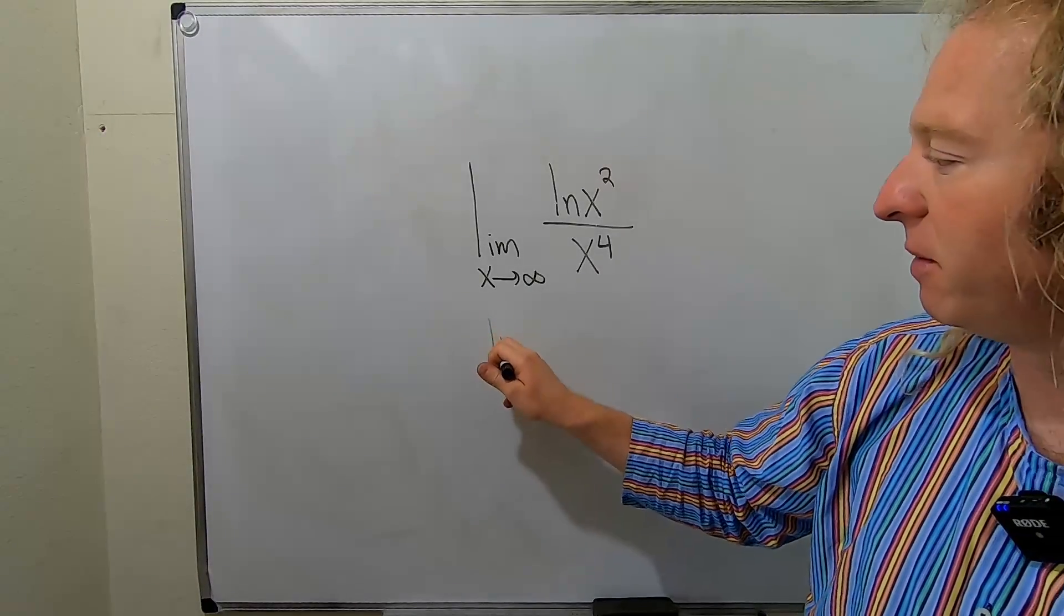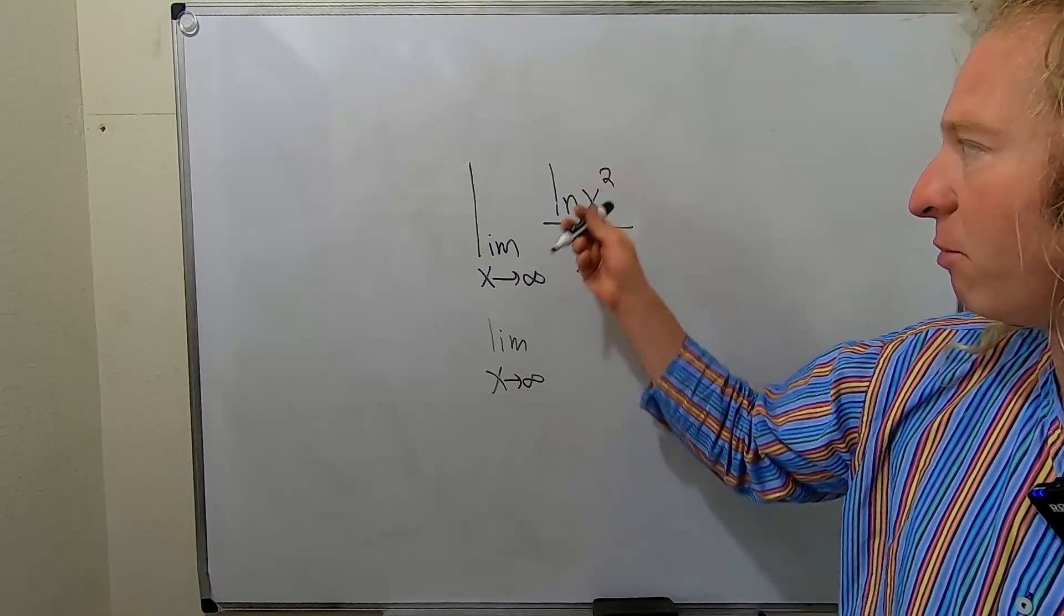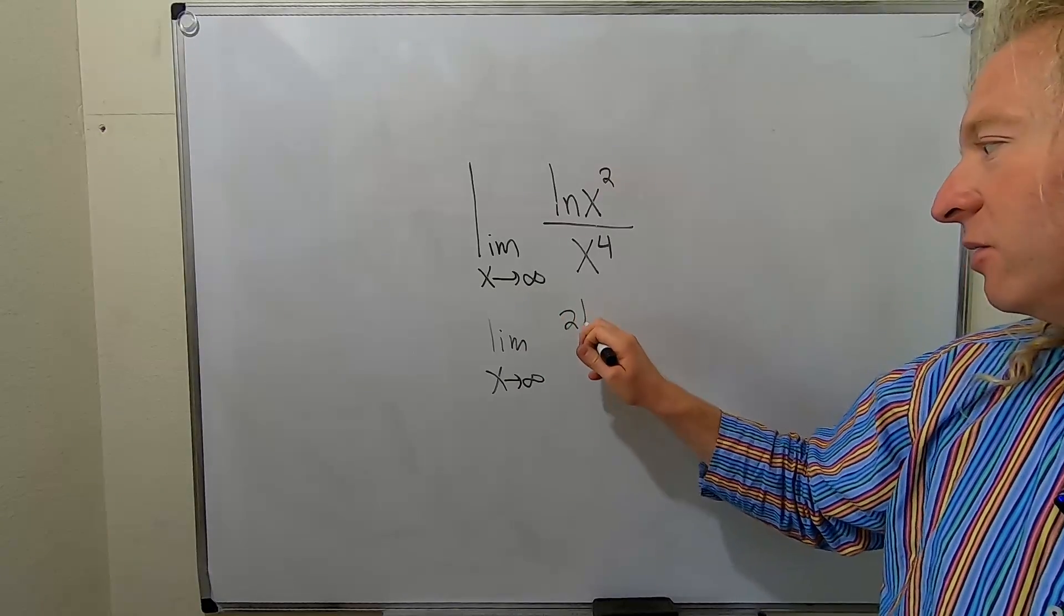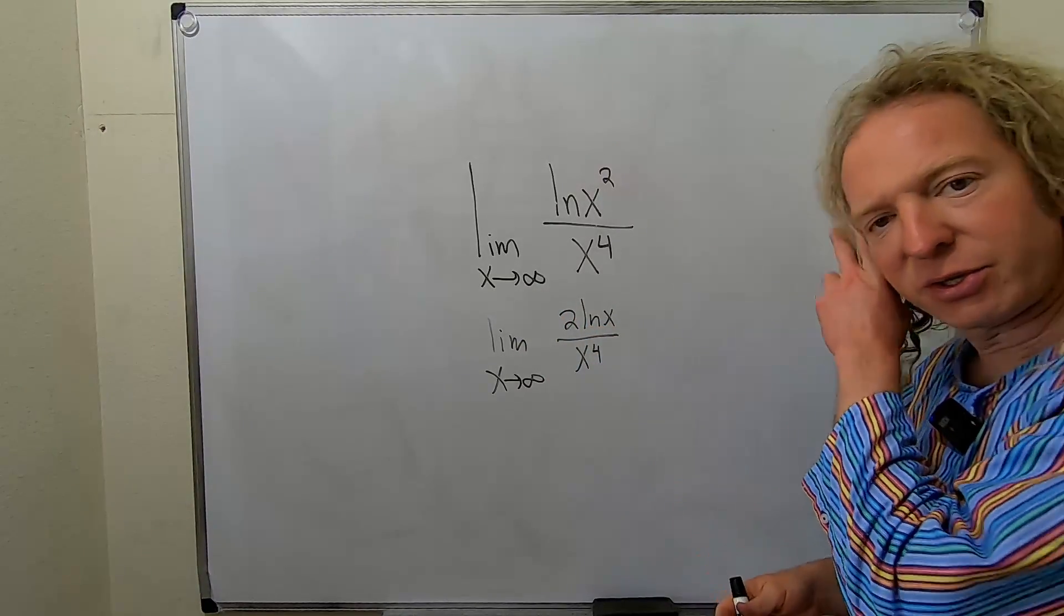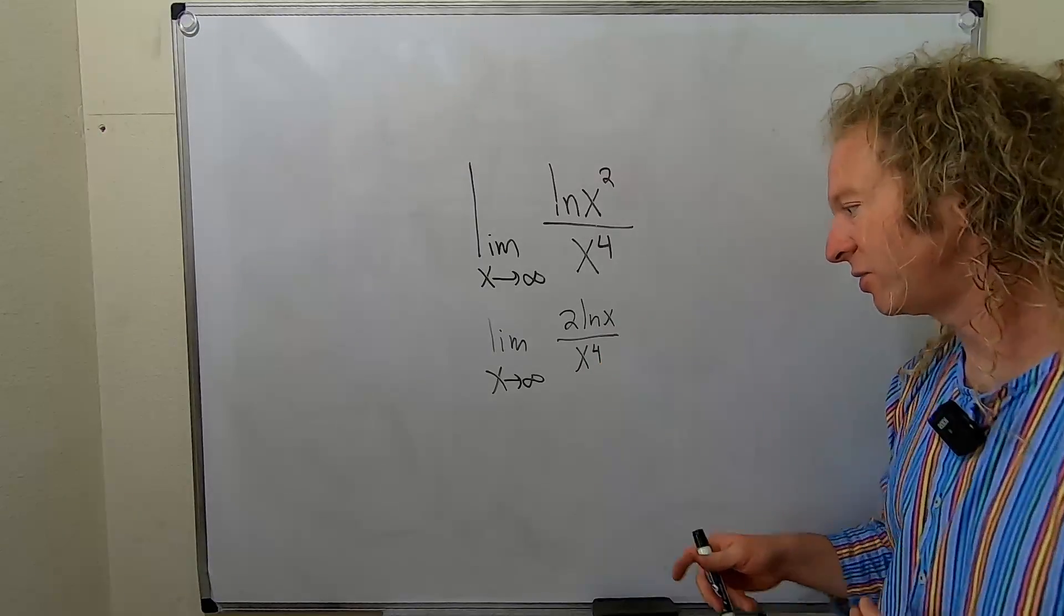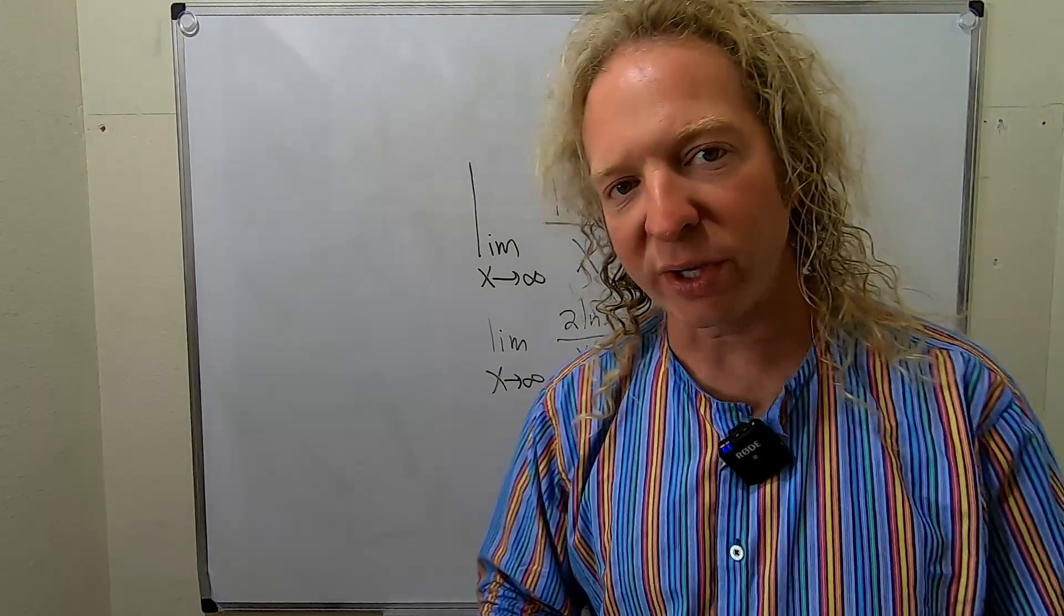What you could first do is rewrite this by bringing the two down. That might make it a little bit easier. So two ln x over x to the fourth. And again you could still say the bottom grows faster so the answer is zero. Instead though we can do something else.